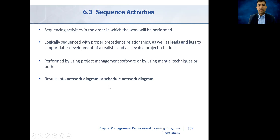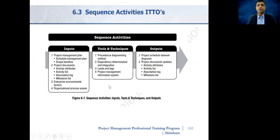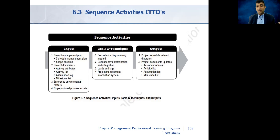Let us have a look at the ITTOs of this process. Among inputs, we have the project management plan, part of which is the schedule management plan and the scope baseline. Then we have project documents, part of which is the activity list, which is the prime input here. Then we have the assumptions log, milestone list, as well as enterprise environmental factors and organizational process assets.